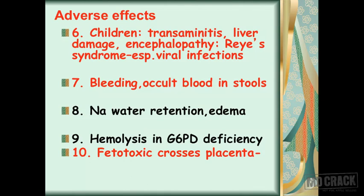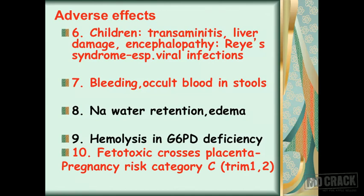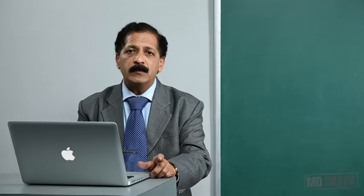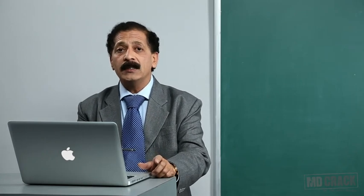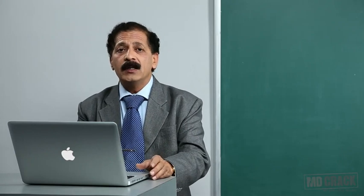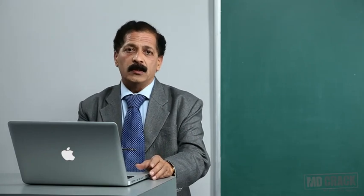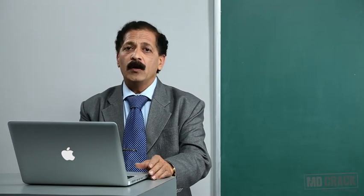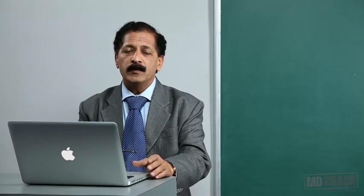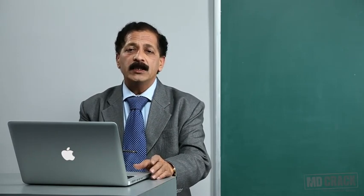There is also hemolysis in patients who already have glucose-6-phosphate dehydrogenase enzyme deficiency. Lastly, aspirin or salicylates are fetotoxic — they cross the placental barrier, go to the fetus, and produce fetopathic effects. The pregnancy risk category during trimesters 1 and 2 is C, and during trimester 3 it is category D. Important adverse effects to remember: peptic ulcer, bleeding, precipitation of bronchial asthma, and analgesic nephropathy.